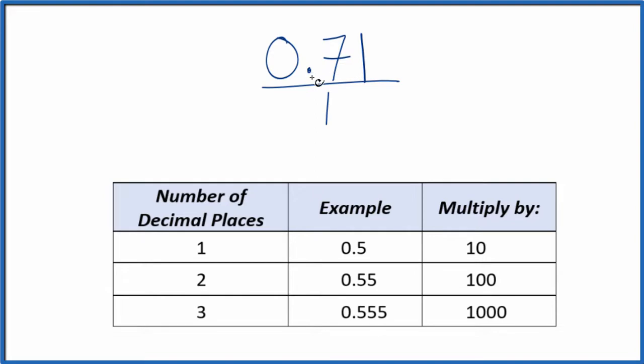I need to get this 0.71 to be a whole number, and I see I have two decimal places. Two decimal places, I can just multiply that by 100.